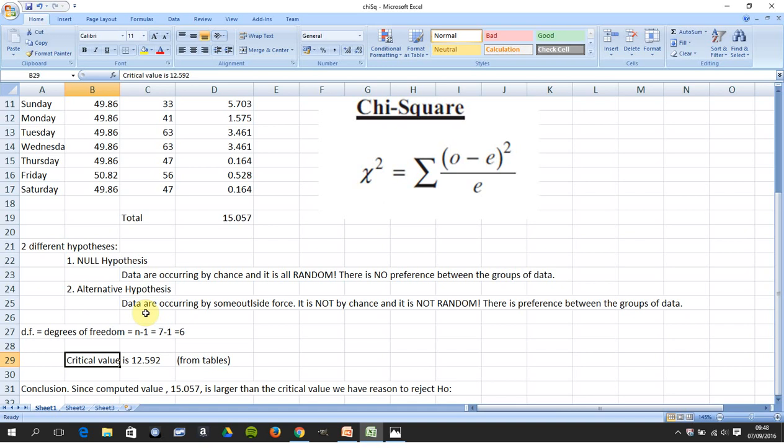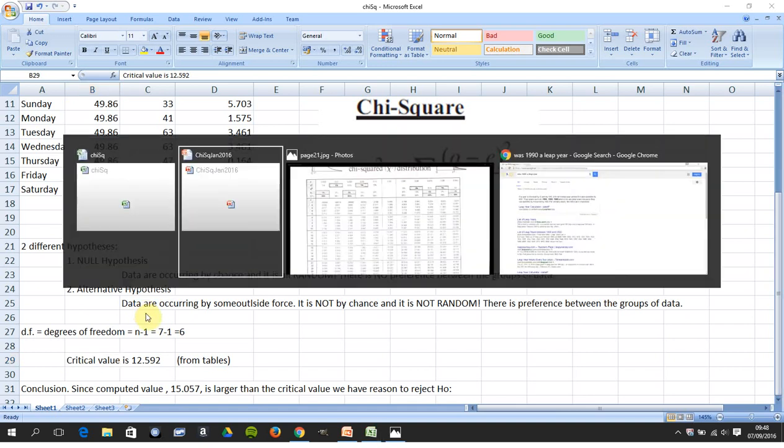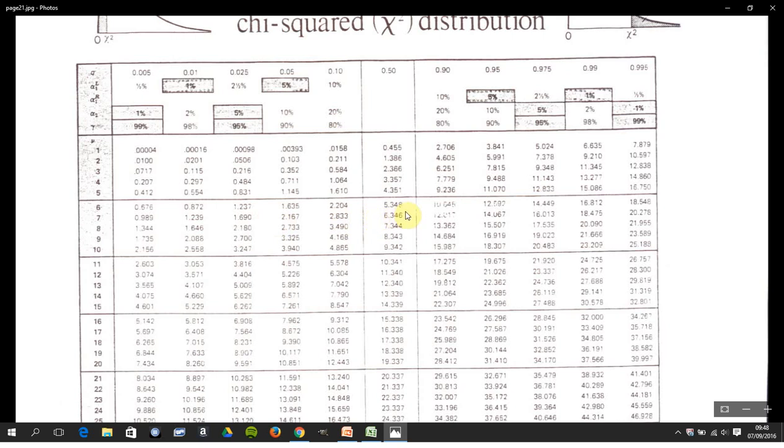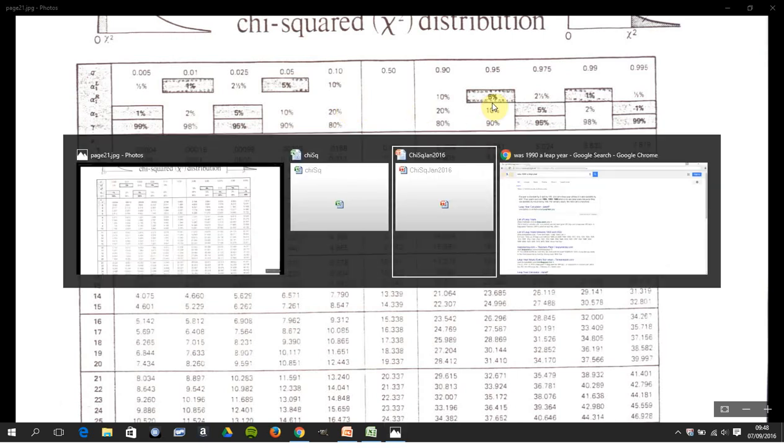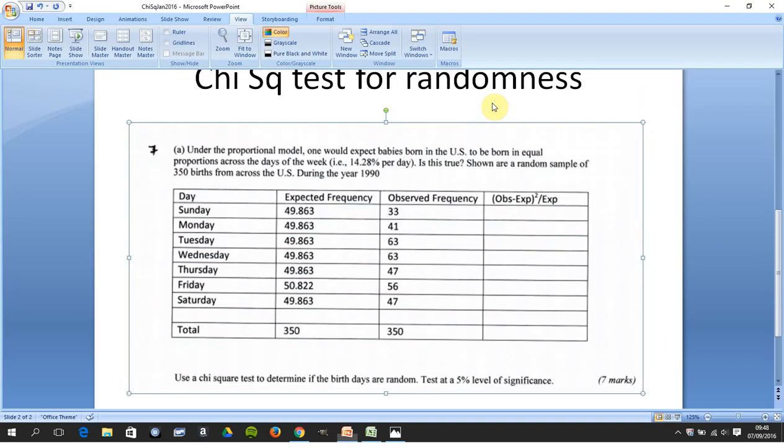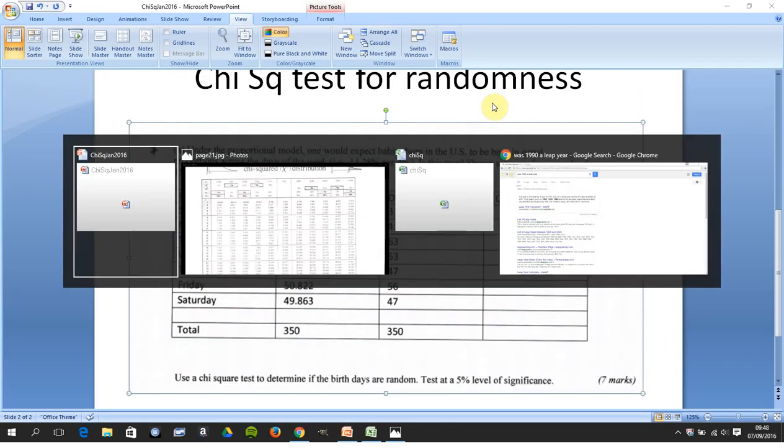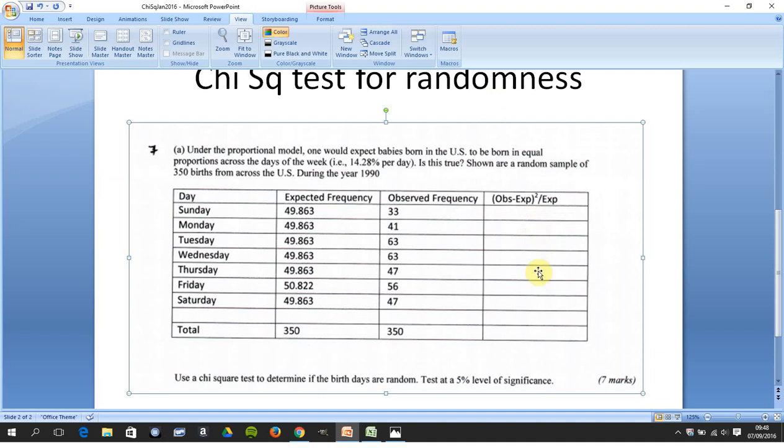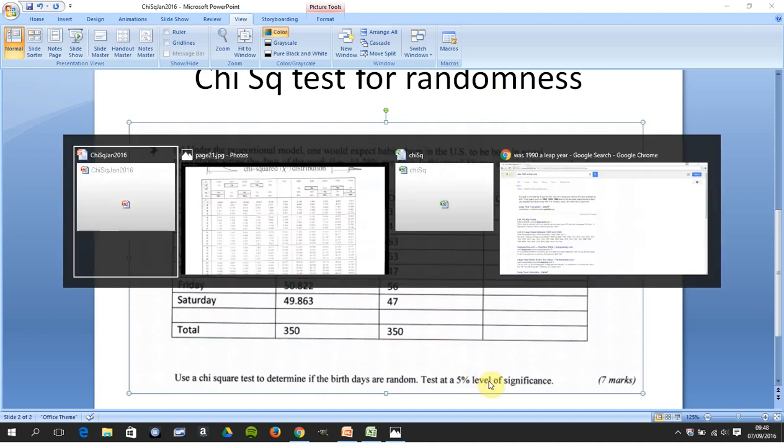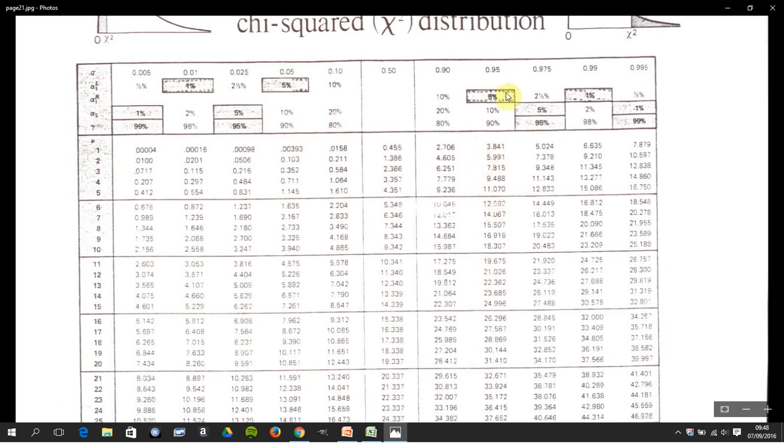And you have to go off and look up the statistical tables. There we are, so you look it up, it's always the same here, alpha one or five percent. Where's the five percent coming from? We're testing at a five percent level of significance. So five percent, six degrees of freedom, 12.592.